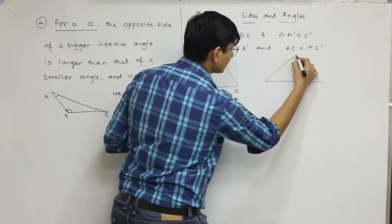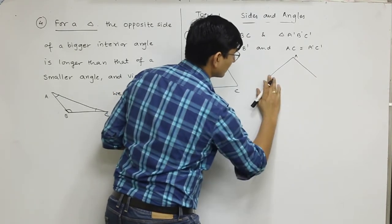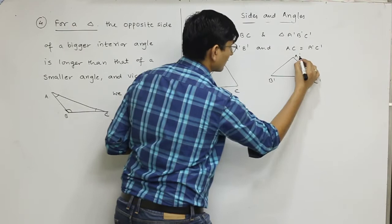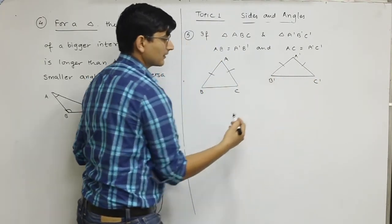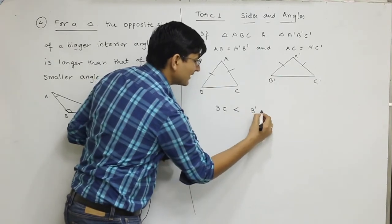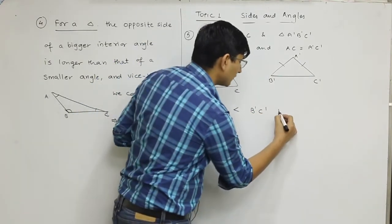I've taken two triangles such that this side is equal and this side is equal. Then I can say that BC will be less than B'C' if and only if angle A is less than angle A'.